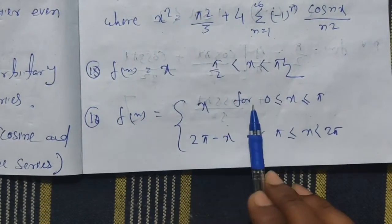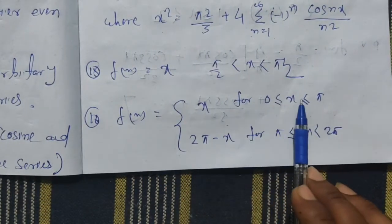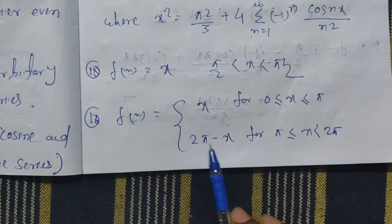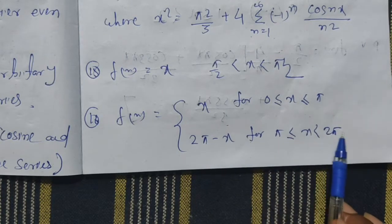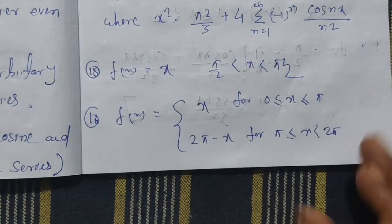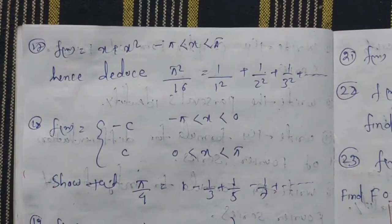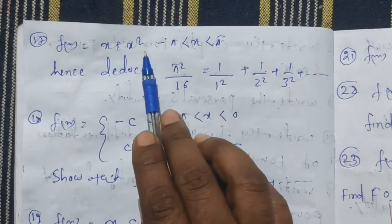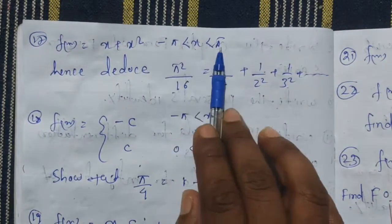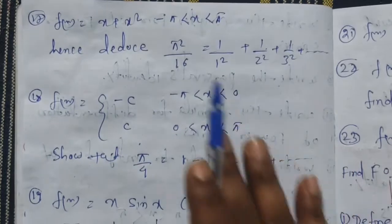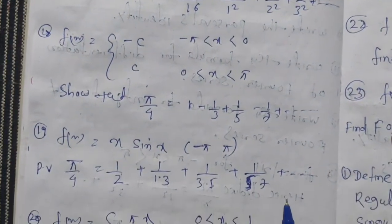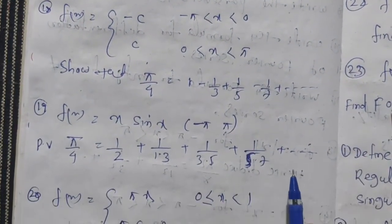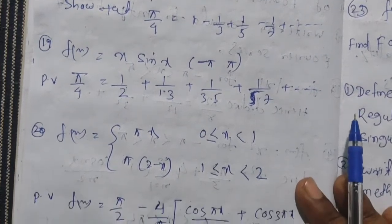f(x) = x for 0 to π, and f(x) = 2π − x for π ≤ x ≤ 2π. Next, f(x) = x + x², range minus pi to pi. These are the long question types — solve them one by one.